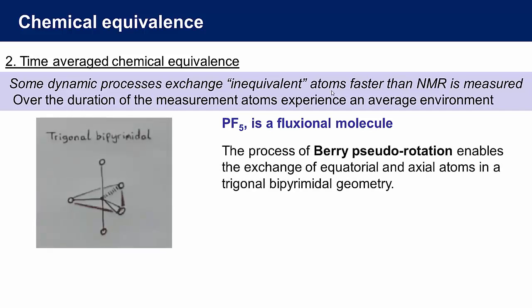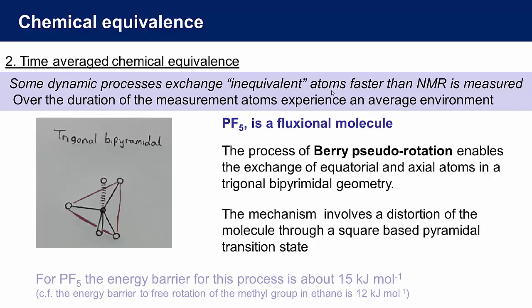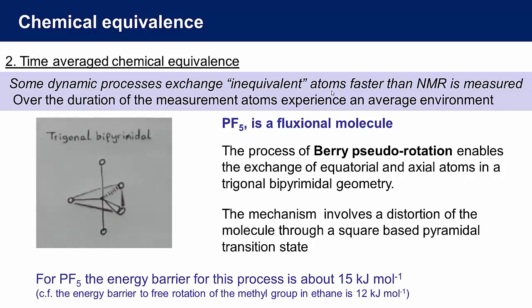This internal dynamic molecular motion is known as fluxionality. The mechanism of exchange is known as Berry's pseudo-rotation. It is a low-energy process that involves a small distortion from the trigonal bipyramidal structure to a square-based pyramidal transition state. The barrier for this process in phosphorus pentafluoride is about the same as the energy barrier for free rotation of a methyl group.